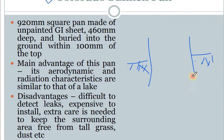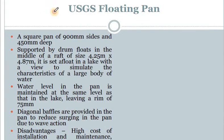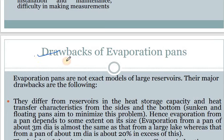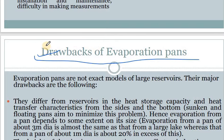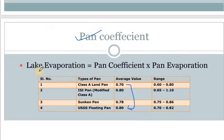Then there is the Colorado sunken pan, which is basically half-installed in soil so that it gives a true representation of that particular reservoir. After that there is the USGS floating pan, which generally floats on rivers or lakes for which you need to find out the evaporation. There are various drawbacks of evaporation pans because they do not truly represent the reservoir or the catchment area — this we discussed in the previous class.